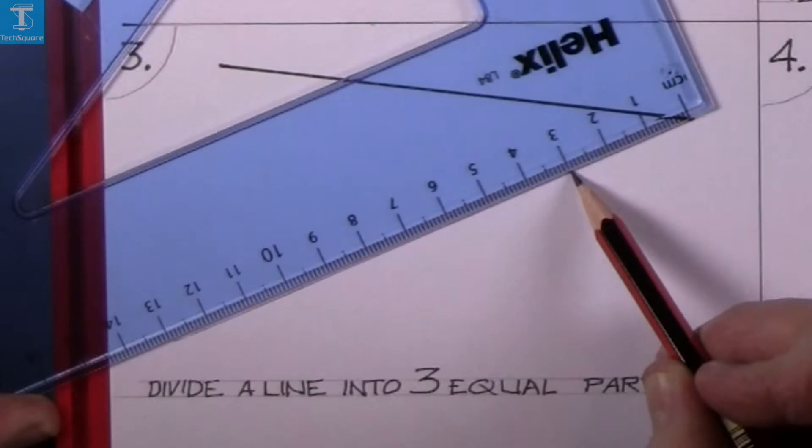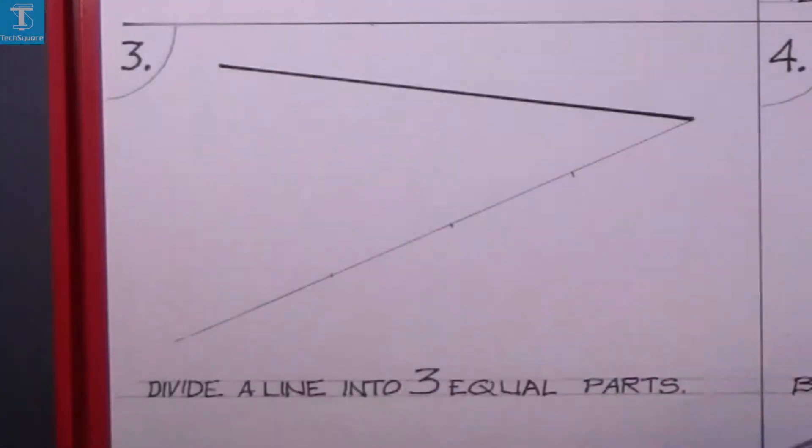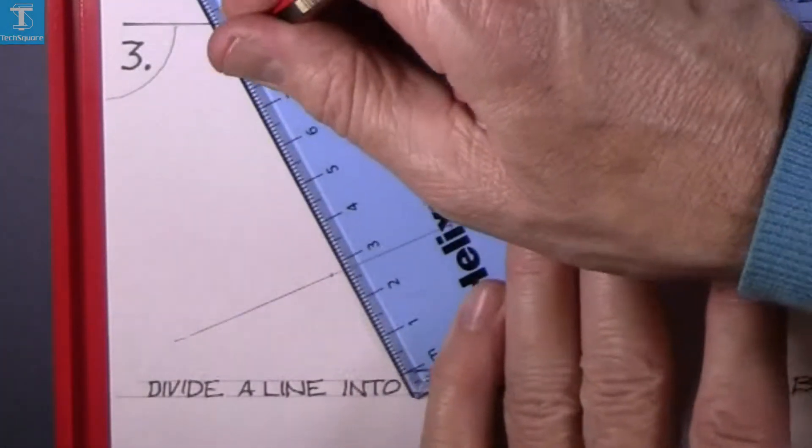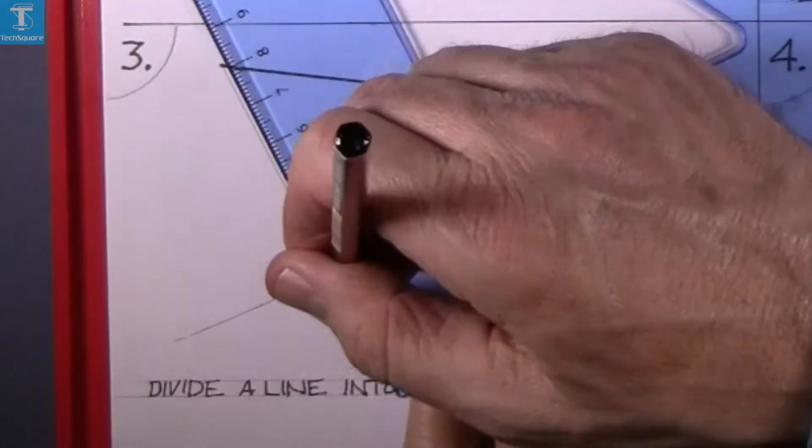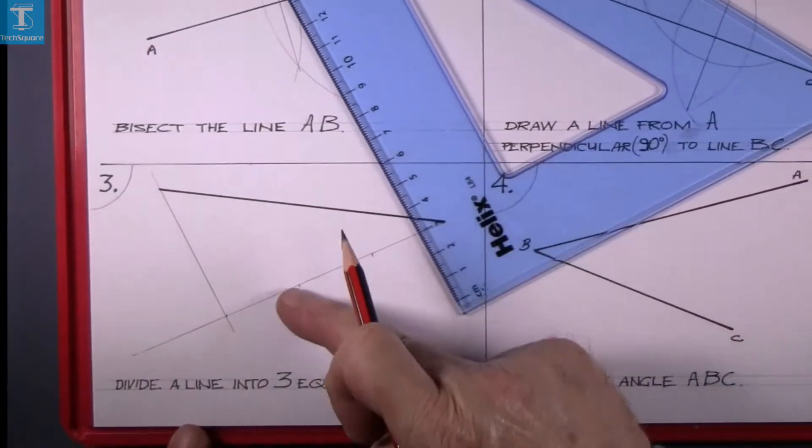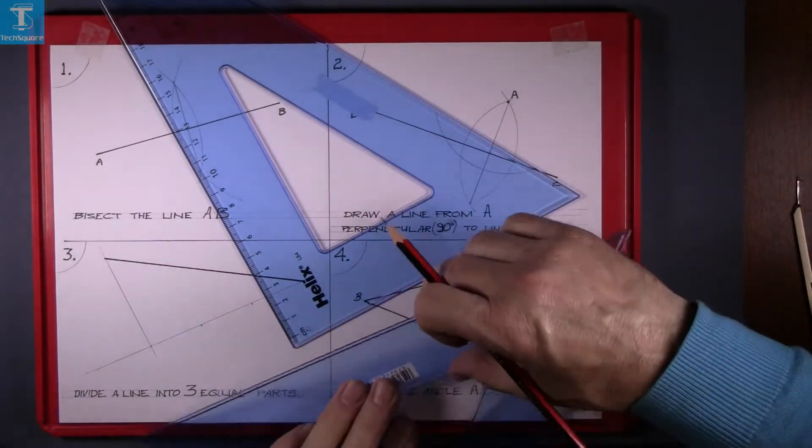The distance we'll take is 3, 6, 9. They're three equal spaces. Join the last one to the end of the line. So that's the end of the line joined to the last of the spaces. Now draw parallel through the other points.